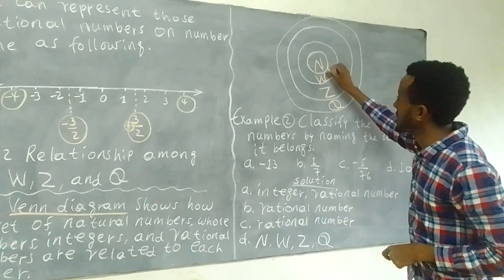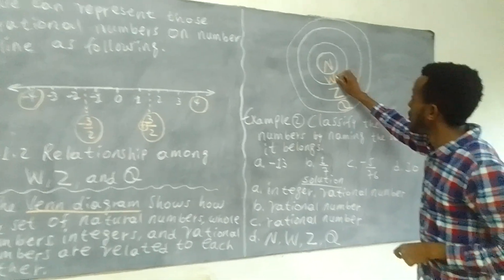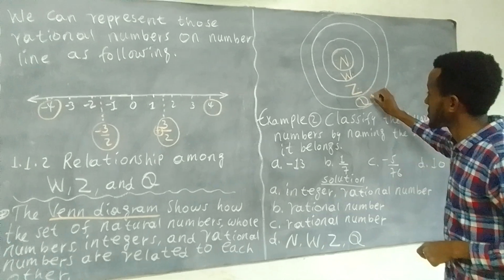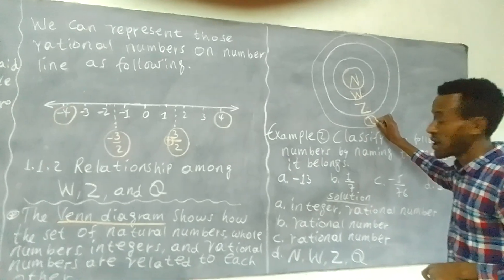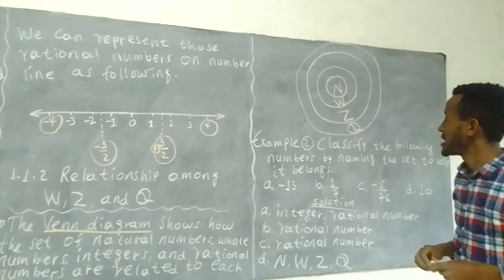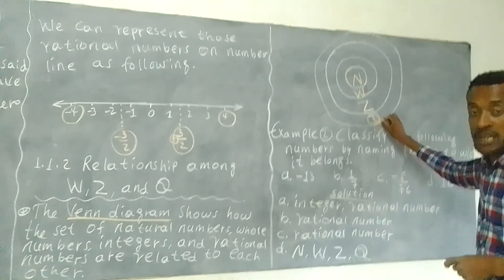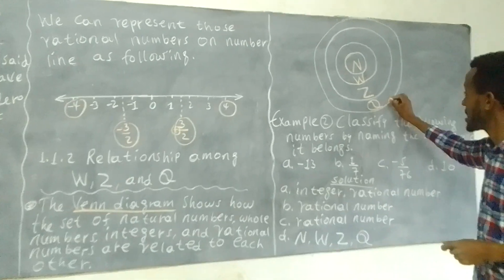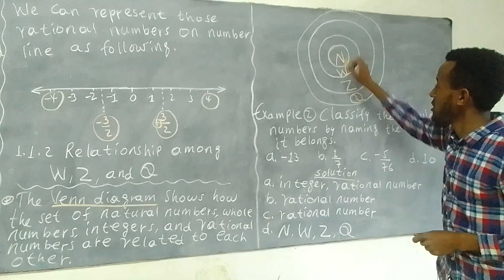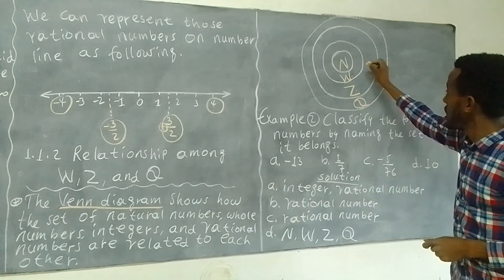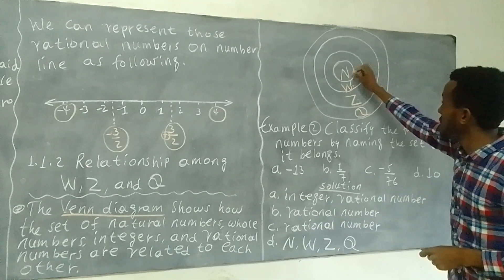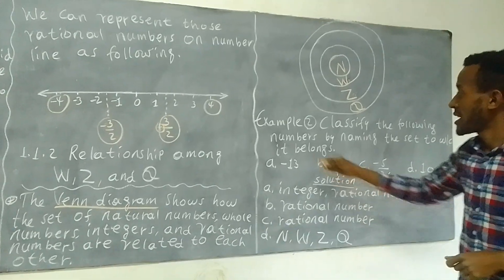Natural number is a subset of whole number, whole number is a subset of integer, integer is a subset of rational number. Rational number contains integer, whole number, and natural number. Integer contains whole number and natural number. Whole number contains natural numbers.